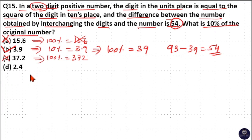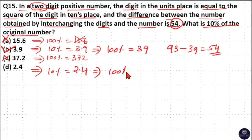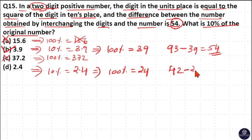Verifying option D: if 10% is 2.4, then 100% is 24. If you interchange 24, it becomes 42. The difference between 42 and 24 is 18, which is not equal to 54. So option D is wrong. Just by looking at the options, you can solve this question.